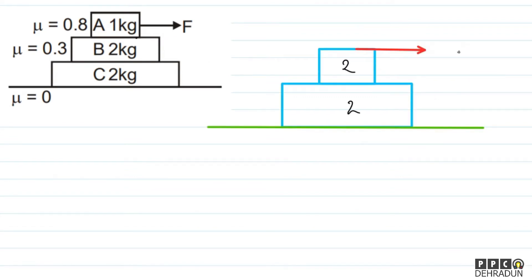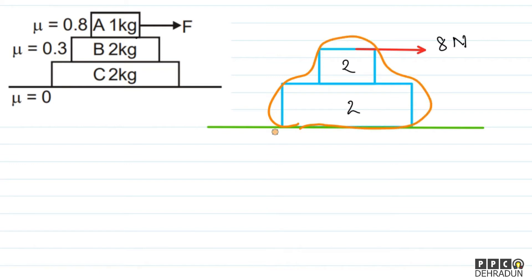Let's consider this special case where maximum friction of 8 N is acting on block B. Let's first assume that both blocks B and C are moving together. In that case, what will the system's acceleration be? Acceleration = total force / total mass = 8 / 4 = 2 m/s². However, there is a hidden assumption here — we assumed both 2 kg blocks are moving together.